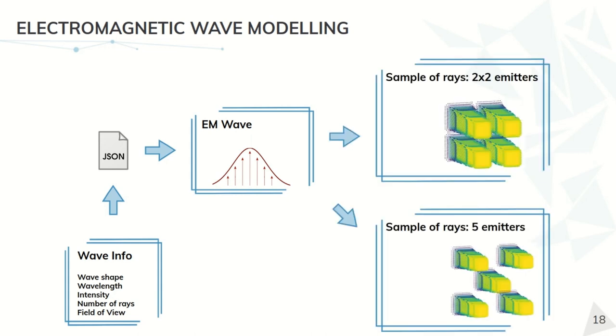In this slide, we can see two different examples of configurations. The upper one, we have a 2x2 emitter grid, and in the bottom one, we have 5 emitters in a cross configuration. In both of them, there are around 450 rays per emitter.